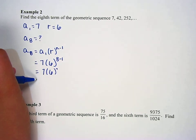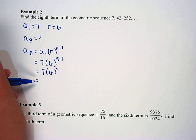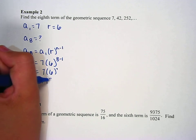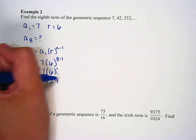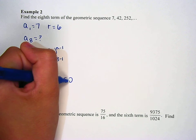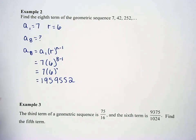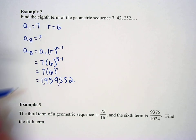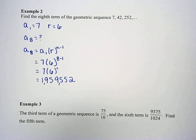And so we say 7 times 6 to the seventh. And if I just type that in, 7 times 6 to the seventh, you get 1,959,552. And so that is one million nine hundred fifty nine thousand five hundred and fifty two, and so that is the eighth term of that geometric sequence.